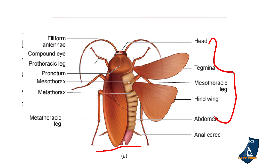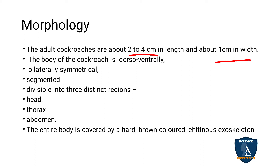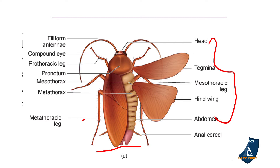The body of cockroach is dorso-ventral, meaning it has upper and lower sides. The upper side is the dorsal portion and the back side is the ventral portion. Dorso-ventral means both upper and lower surfaces are present.